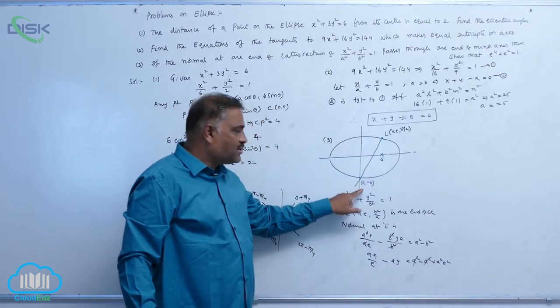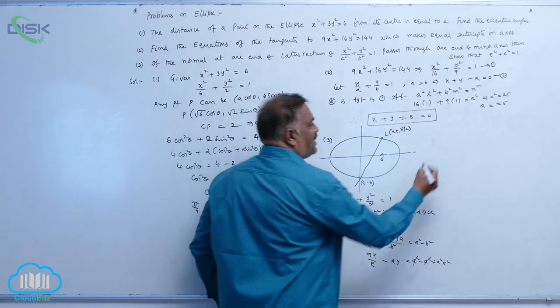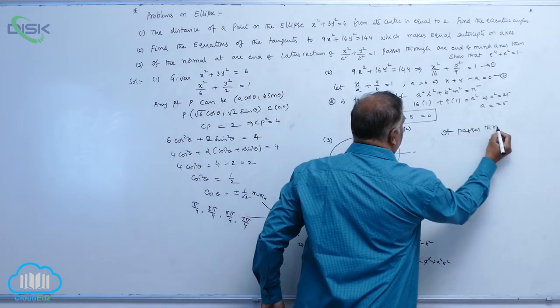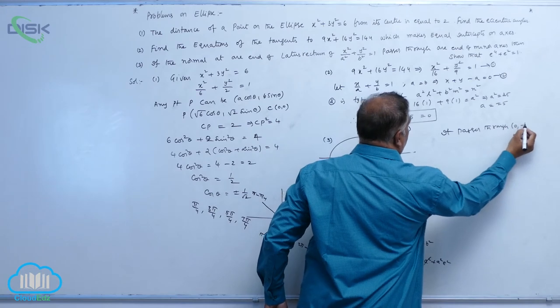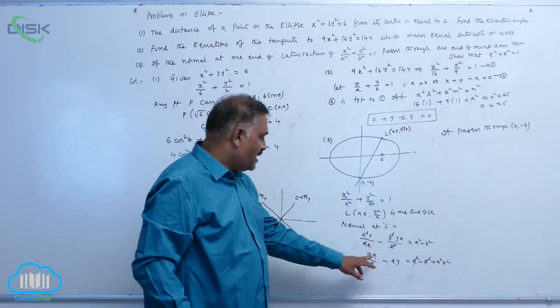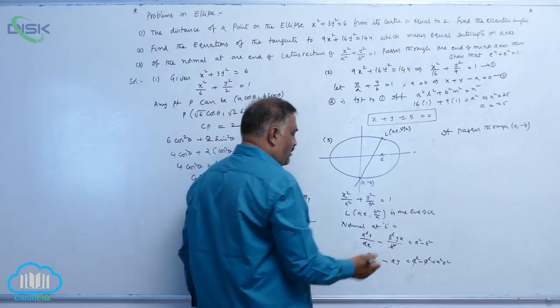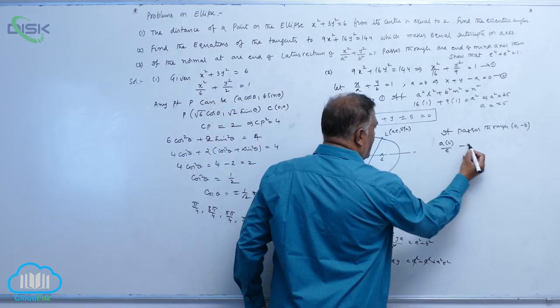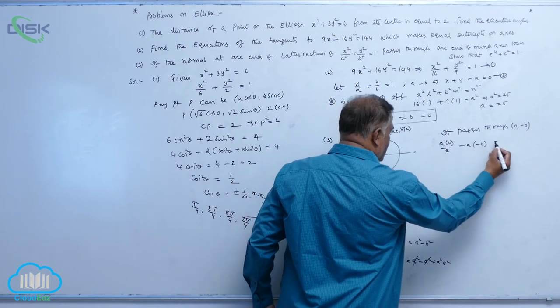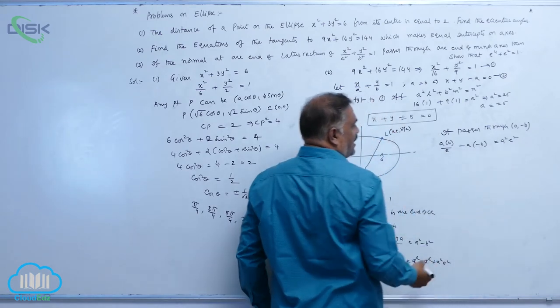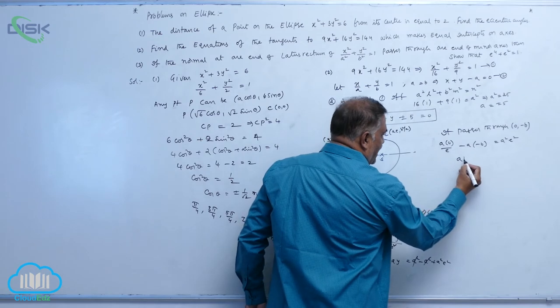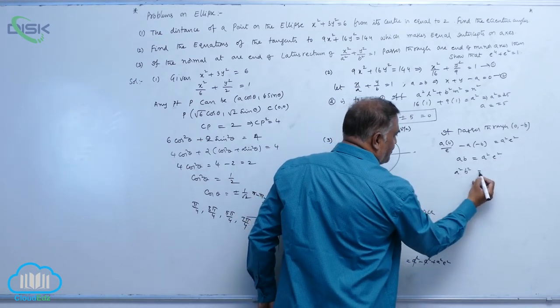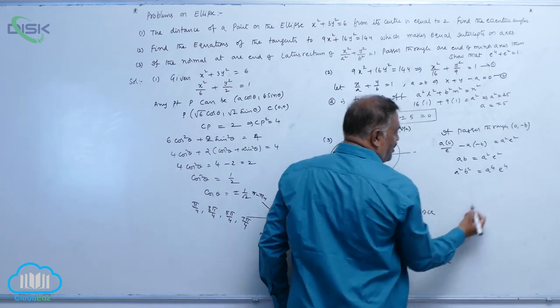This line passes through 0 comma minus b. Wherever x and y is there, substitute 0 comma minus b. A into 0 by e minus a into minus b is equal to a square e square. So a b is equal to a square e square.